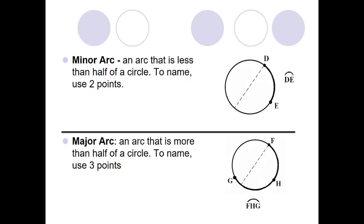But let's talk more about arcs. We can have both minor arcs and major arcs. A minor arc is an arc that's less than a semicircle. So we can see right here we have arc DE.